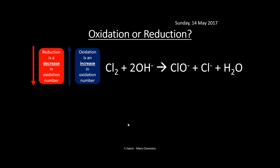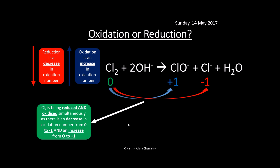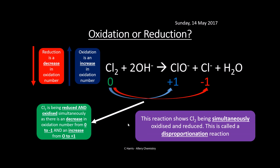Now let's look at a special type of reaction. When chlorine reacts with NaOH, chlorine starts with an oxidation state of zero but appears in two different forms as products: ClO⁻ where chlorine is plus one, and Cl⁻ where it's minus one. Chlorine is simultaneously oxidised (zero to plus one) and reduced (zero to minus one). When an element is simultaneously oxidised and reduced in the same reaction, we call it a disproportionation reaction.